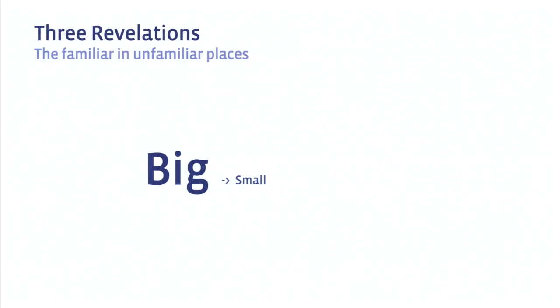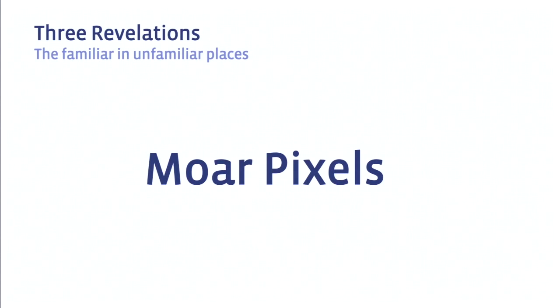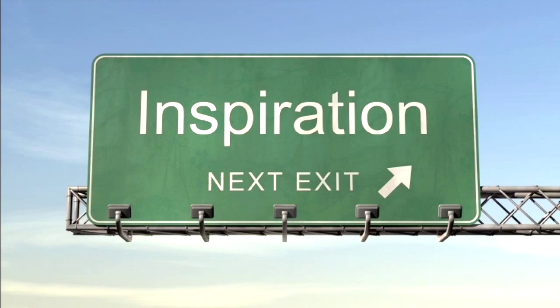Fortunately, there's a happy ending. I'm going to tell you about how I answered some of those questions and came up with the following revelations. First: all big data has to become small data in order to be visualized. Even a retina display only has about five million pixels, so if your data is bigger than five million points, you've got to start thinking about how to make it smaller. Second, what I'm calling the fresh data revolution — it's really about why real-time systems are great for big data. And finally, if life hands you more data, consider using more pixels.